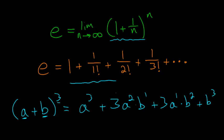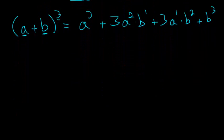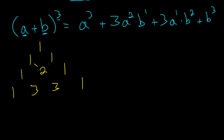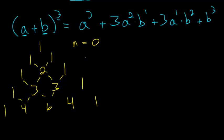There are a couple different ways to get these coefficients. One way is to use Pascal's triangle: 1; then 1, 1; then 1, 2, 1; then 1, 3, 3, 1 — where you add adjacent entries to get the next row. For instance, 1+1 gives 2, and 1+2 gives 3. The next row would be 1, 4, 6, 4, 1. Each row corresponds to what power the binomial is raised to, where n=0 is the first row, n=1 the second, and so on.